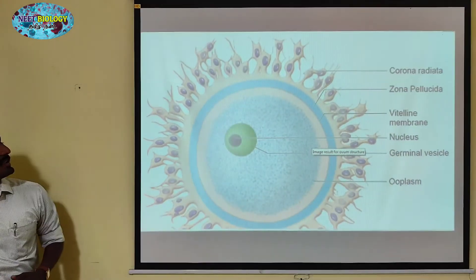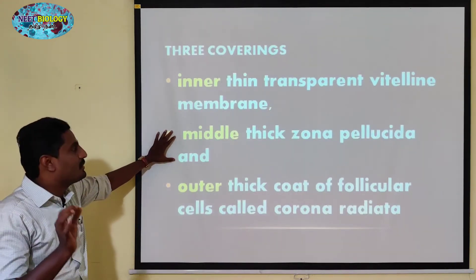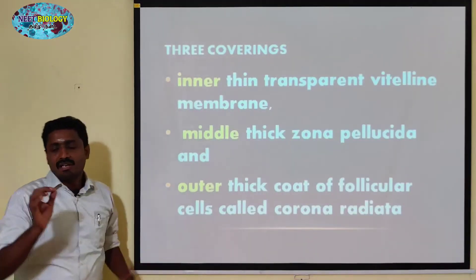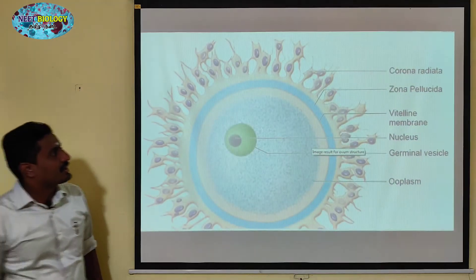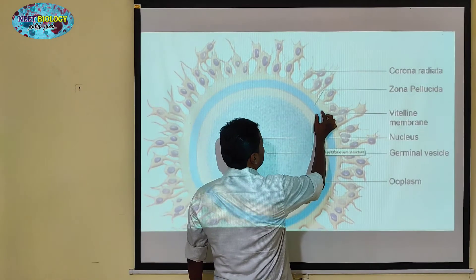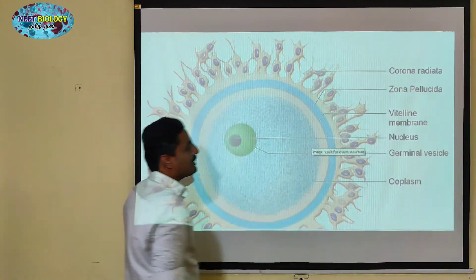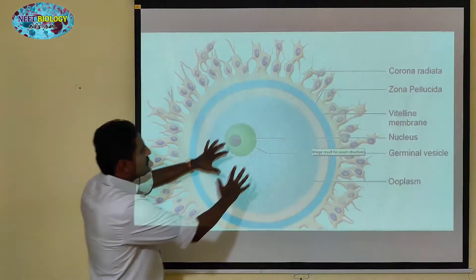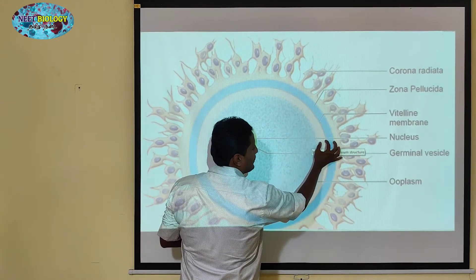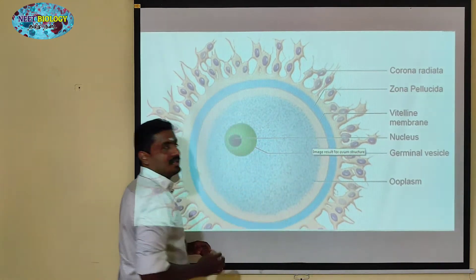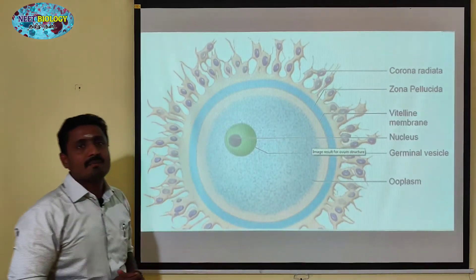Next, we will talk about the middle region. This is the zona pellucida. The middle region is the zona pellucida, which is marked in the diagram. In the clear region, it is called the zona pellucida. It is the inner most layer surrounding the ovum just outside the vitelline membrane.